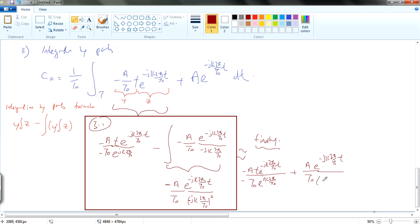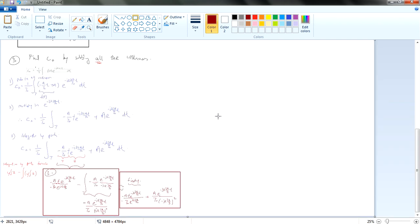And then, and then minus jk 2π T0 square. So this is the final form. And, yeah, so I think I'll just stop here because this is a very long video.